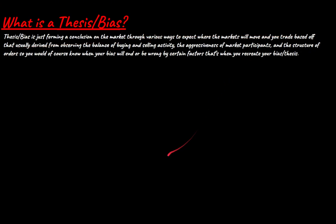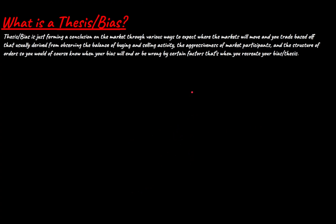For example, if you're long biased, you would only take levels that are long levels in your volume profiles. If price goes up and there's a short level, you'd want it to disrespect it, then re-tap and get your longs — because that's your bias. This is usually derived from observing the balance of buying and selling activity and the aggressiveness of market participants. You want to see how aggressive participants are, and look at the structure of the orders.